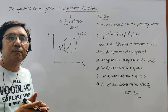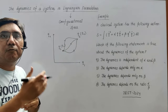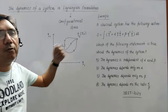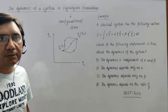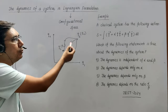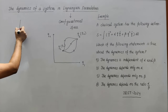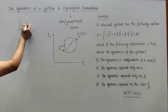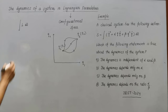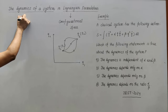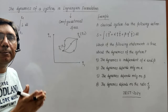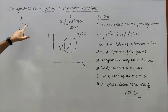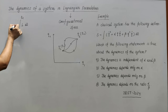Naturally, which path is this system going to follow in the dynamics of the system? This was answered by Hamilton in the form of Hamilton's least action principle. This principle says that the system is going to follow the path for which the line integral of the Lagrangian with respect to time from t1 to t2 will have the least value. This line integration is called as action.